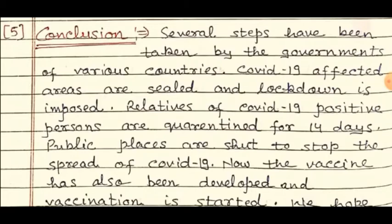Point number five: Conclusion. Several steps have been taken by the governments of various countries. COVID-19 affected areas are sealed and lockdown is imposed.